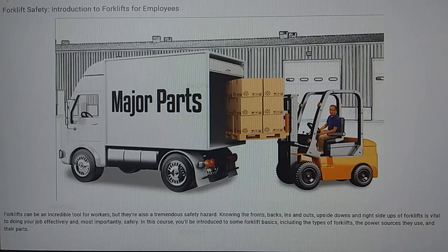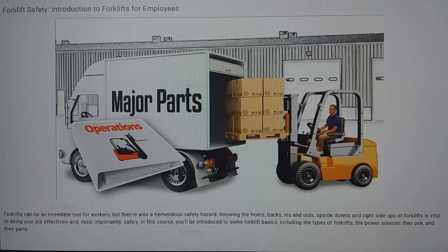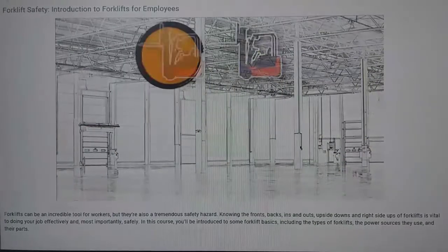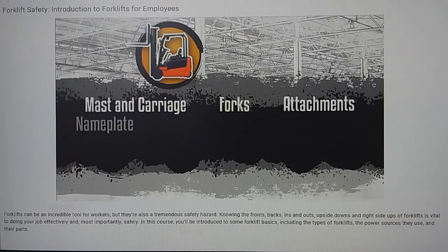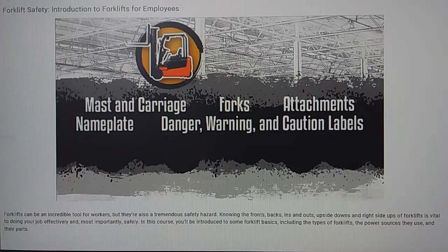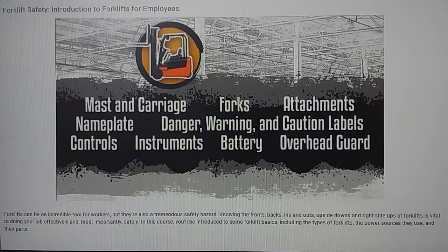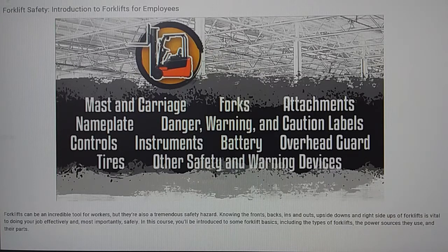The last thing we'll cover are the major parts of the most common types of forklifts. You'll definitely want to read the operator's manual for any forklift you'll be operating, but we'll cover the basics here. The basic parts of a forklift include the mast and carriage, forks, attachments, nameplate, danger warning and caution labels, controls, instruments, battery, overhead guard, tires, and other safety and warning devices.